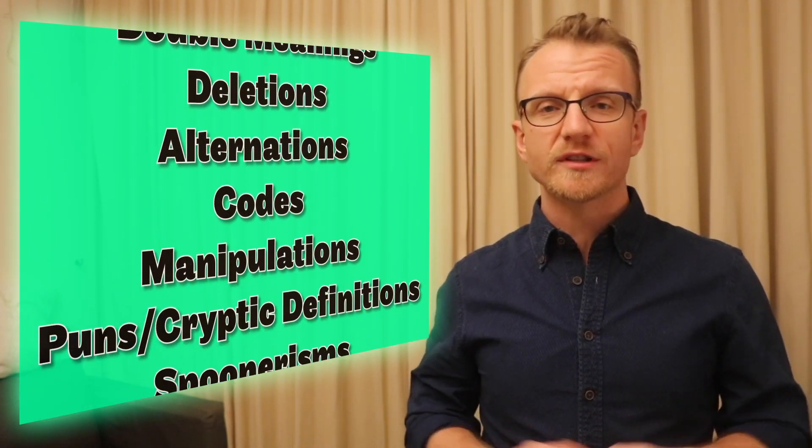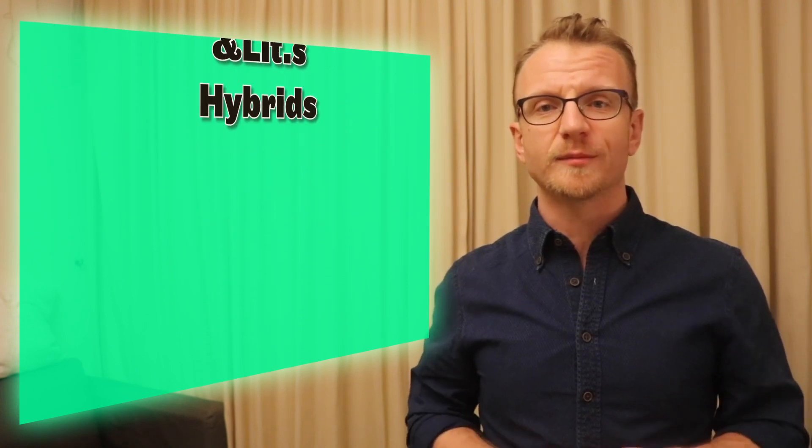In this series so far we've done five different clue types and covered the basic principles of how to read and dissect a cryptic clue. With the knowledge we now have, the next handful of clue types should be fairly intuitive as long as you know that these clue types exist.